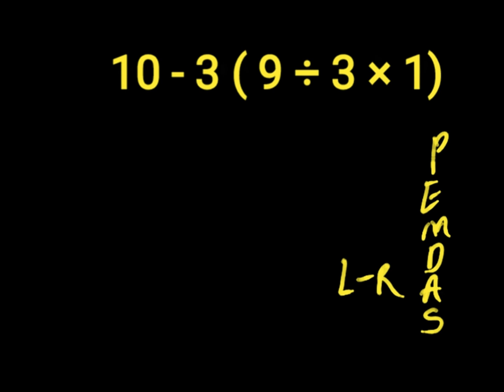We first of all do our parenthesis, which is 9 divided by 3 times 1. 9 divided by 3 will give us 3, then we have 3 times 1. Then we bring down our 10 minus 3. So 3 times 1 will give us 3.